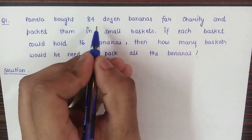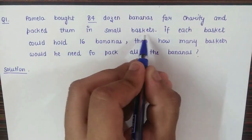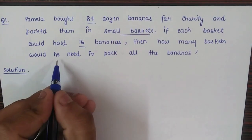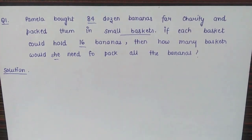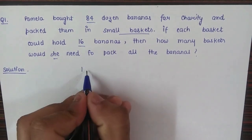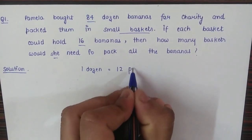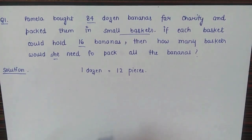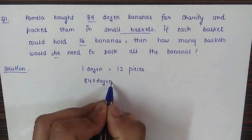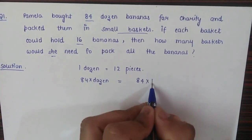In question number one, Pamela bought 84 dozen bananas for charity and packed them in small baskets. If each basket could hold 16 bananas, how many baskets would she need to pack all the bananas? We know that one dozen is equal to 12 pieces, and she bought 84 dozen, so 84 dozen equals 84 multiplied by 12.